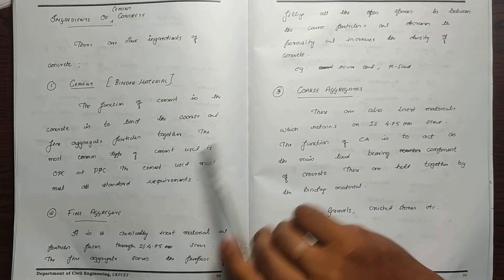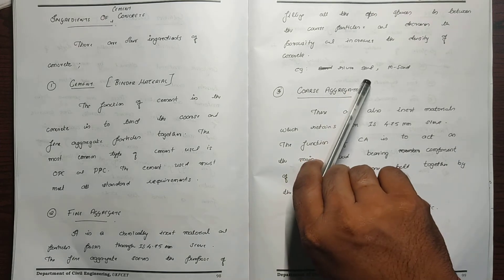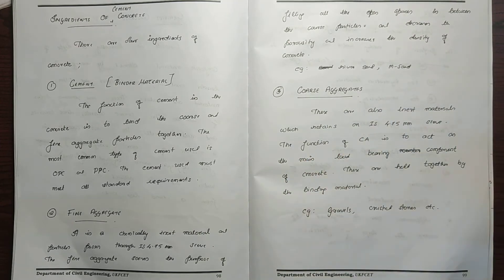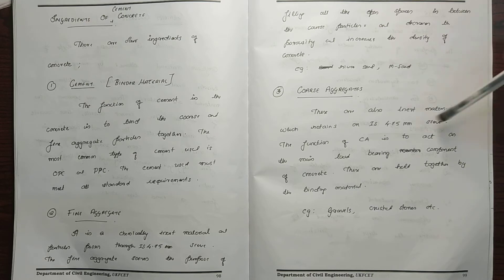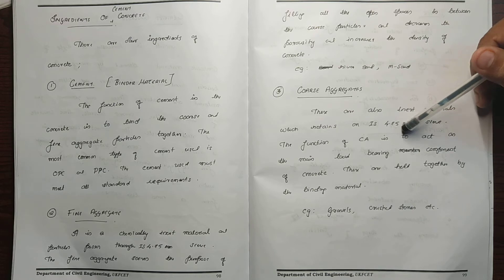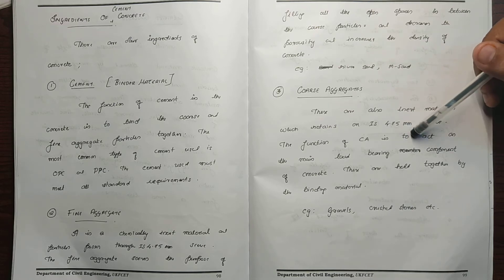The third ingredient is coarse aggregate. These are also inert materials. Fine aggregates pass through a 4.75mm IS sieve, while coarse aggregates are retained on that sieve.